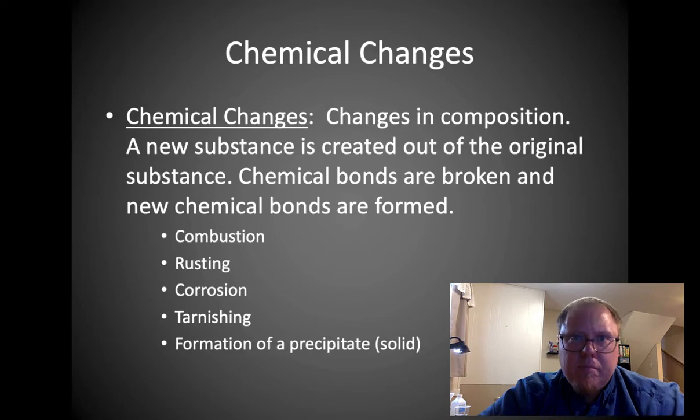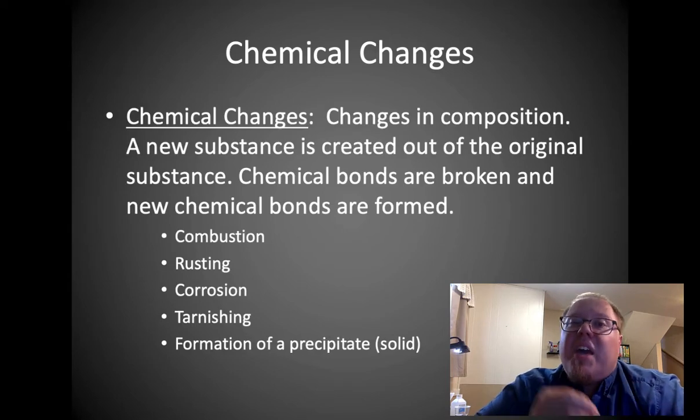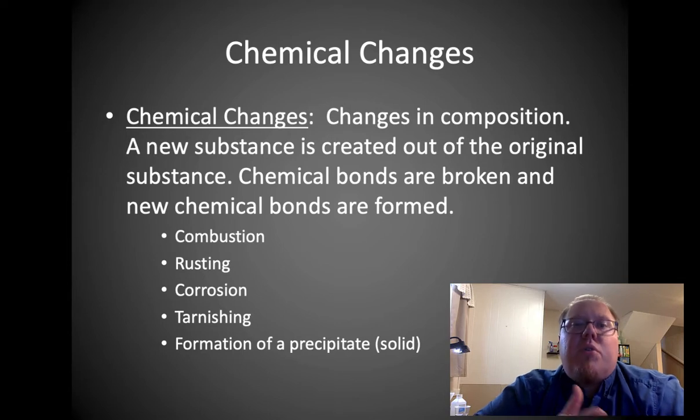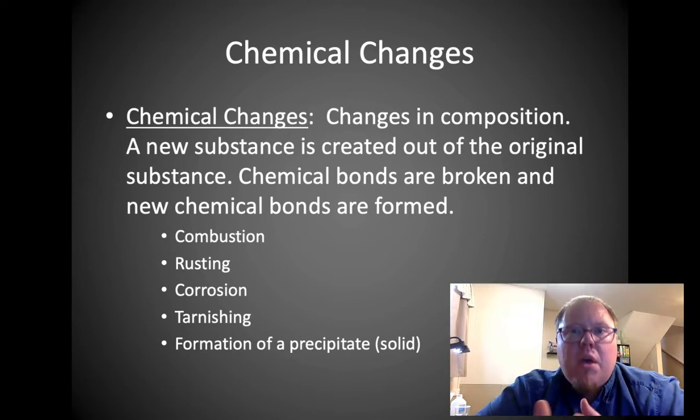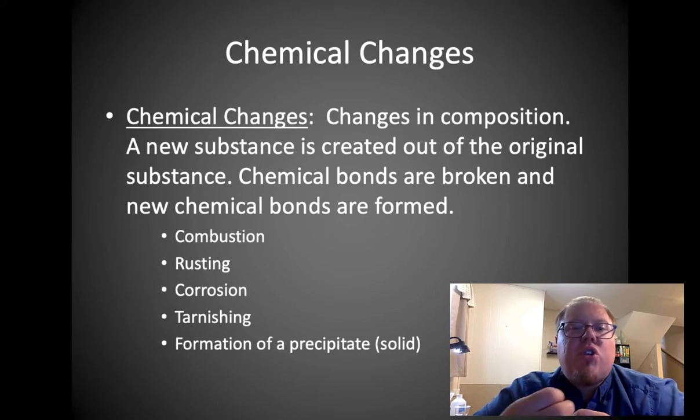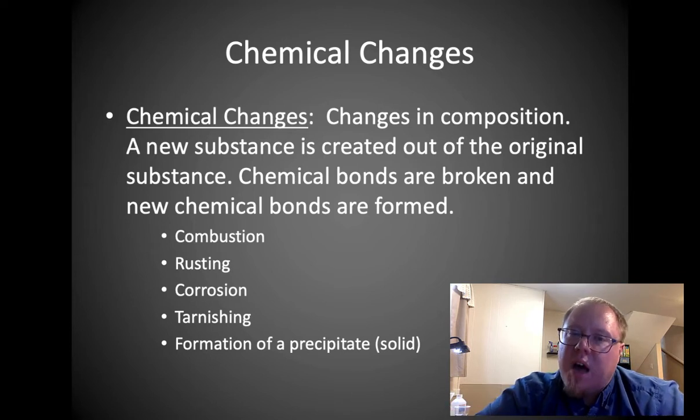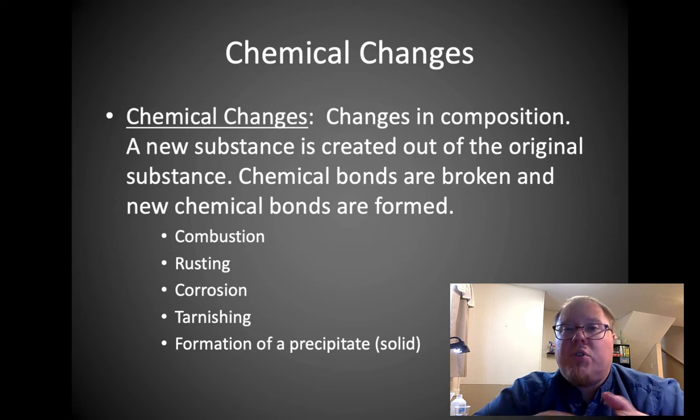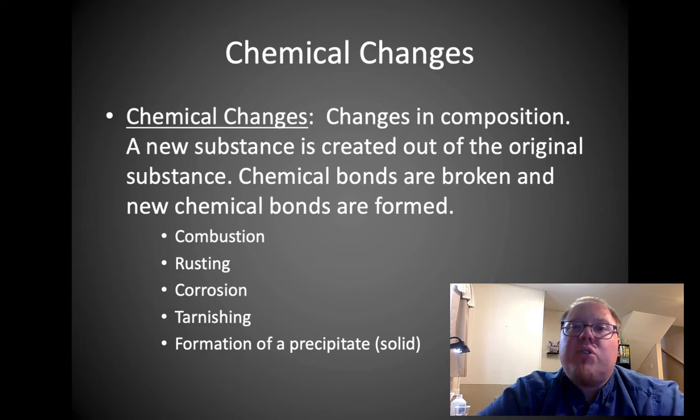Chemical changes create new material. It's a change in composition when a new substance is created. Chemical bonds are either broken or new bonds are formed. Examples include combustion where you burn something and it turns into carbon dioxide, water, smoke, new materials. Rusting: iron and oxygen turning into iron oxide. Corrosion, tarnishing. Formation of a precipitate when you get something that was liquid that suddenly forms a solid. That would be a chemical change as it creates that new solid from liquids.